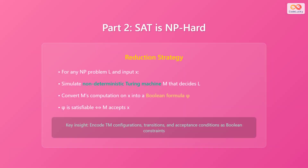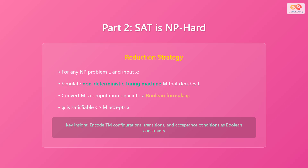Now for the more challenging part: showing that SAT is NP-hard. This requires us to demonstrate that every NP problem can be reduced to SAT in polynomial time. Here is the reduction strategy: for any NP problem L and input X, simulate a non-deterministic Turing machine M that decides L. Then convert M's computation on X into a Boolean formula phi. The formula phi is satisfiable if and only if M accepts X. The key insight is to encode the Turing machine configurations, transitions, and acceptance conditions as Boolean constraints.